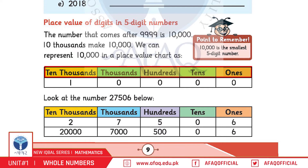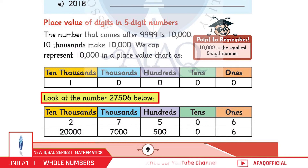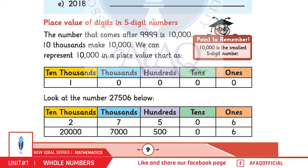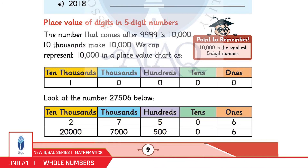बच्चो, आप इस नंबर को देखें: 27,506। अगर आप गौर करें तो इस नंबर में 6 Ones, 0 Tens, 5 Hundreds, 7 Thousands, और 2 Ten Thousands हैं।